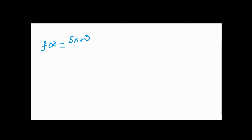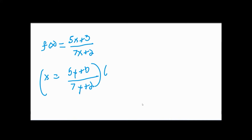These rational function inverses are the best examples for connecting to implicit differentiation. Let's do another: f(x) = (5x + 3) / (7x + 2). Following the process, this becomes x = (5y + 3) / (7y + 2). Multiplying both sides by (7y + 2) gives: 7xy + 2x = 5y + 3.